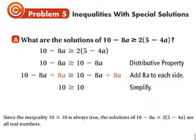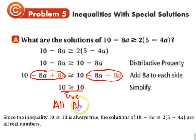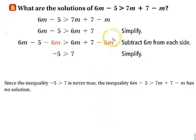Now, special solutions. Look here. We go through the process, we distribute. Notice what happens with the variables—they cancel each other out. Notice what we're left with. This is true, so all numbers. I can plug in any value, and it's always going to be true. The variables cancel, and what you're left with is a true sentence.